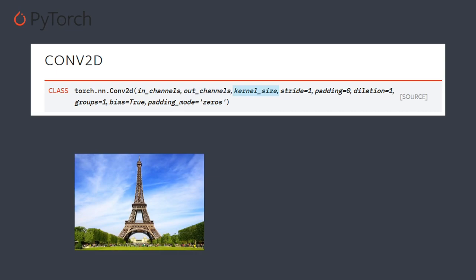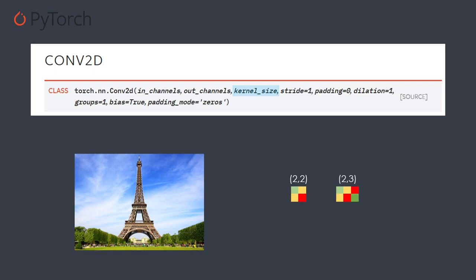Next, we have the kernel_size. Here I will represent a 2 by 2 kernel. Your kernel size must match the dimensionality of your images — if you have a 2D image, you need a 2D kernel. It can be 2 by 2, 2 by 3, or even 3 by 3. What matters is that you always have two dimensions, and the kernel will have a depth equal to the number of input channels.